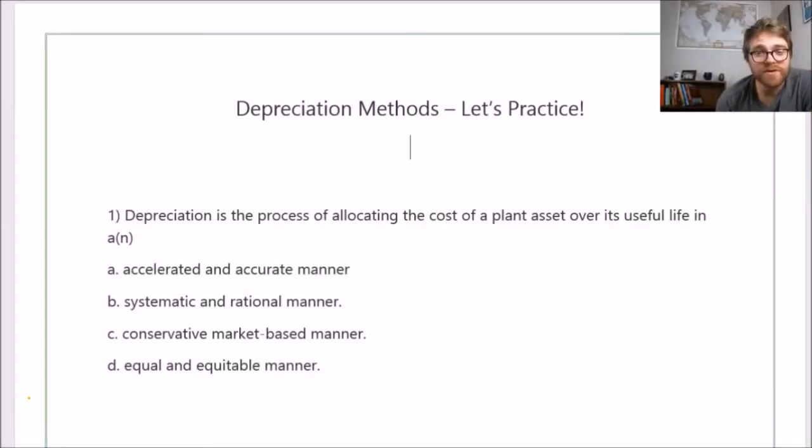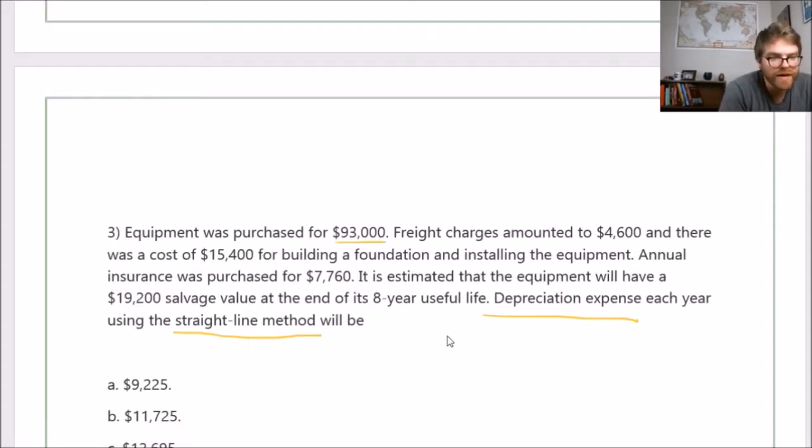All right, hey there students. In this video today we're going to go over depreciation methods. Equipment was purchased for $93,000, freight charges amounted to $4,600, and there was a cost of $15,400 to build the foundation and install it. Annual insurance was purchased for $7,760. It is estimated that the equipment will have a $19,200 salvage value and an 8-year useful life.